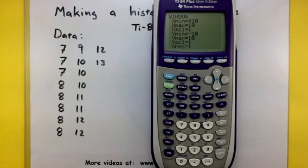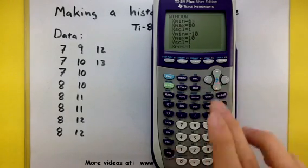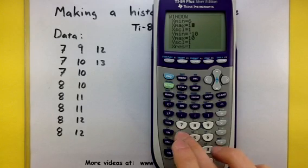I want to give myself a little extra space, so I want my X minimum to be 6 and my X maximum to be 14.